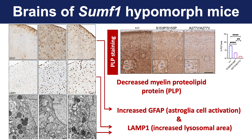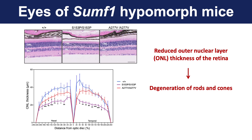Interestingly, these mice were also found to have an ocular phenotype with reduced outer nuclear layer thickness in the retina, as shown here by the slide. This is a cross-section of the retina of the mice. They were also found to have electroretinogram abnormalities. Altogether, these results suggest the degeneration of rods and cones.